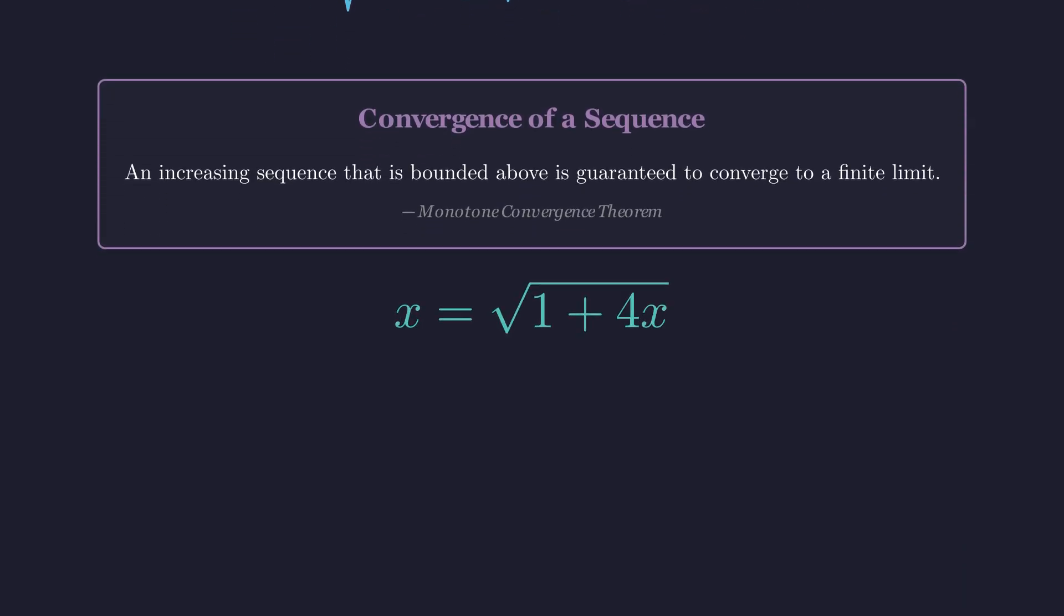So we can replace that entire inner part with x again. What we get is this beautifully simple equation where x equals the square root of 1 plus 4x. Great. Now we have something we can actually solve.